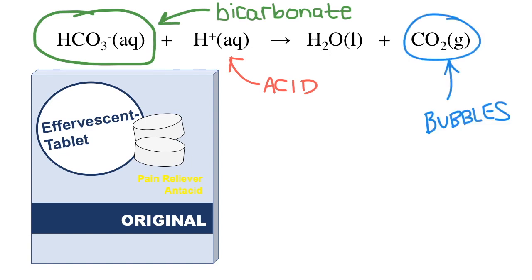Those bubbles are carbon dioxide, the same stuff that makes pop fizzy. Now there isn't actually enough acid in the tablet to react all of the base. But we can put the acid in excess by adding a whole bunch more. We can just use vinegar, which is acetic acid.